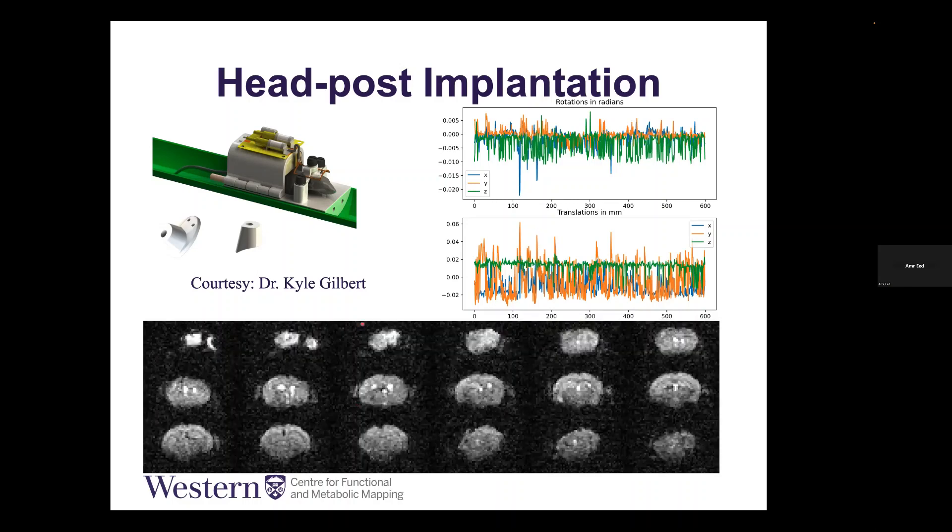This is one animal, raw data from one animal, just an average acquisition. This is not the best or the worst, just what we usually expect. As you can see, we have signal from all over the brain. There's almost no dropout, especially in the cortex, since most of our tasks are basically done in the cortex.